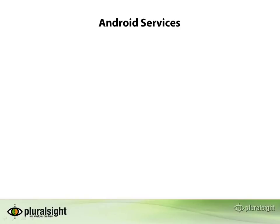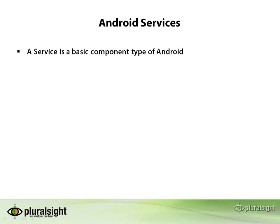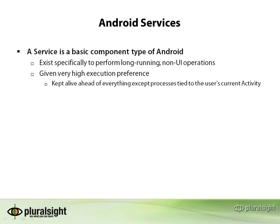The mechanism we have to let the operating system know that some activity or task is important to the user, even though the user isn't interacting with it right now, is a service. A service is just a component type for Android. As a component type, that means it's some class we implement and something we define inside of our Android manifest. Services exist specifically to tell the operating system that I'm performing some long-running operation, and I know it's not using the user interface right now, but it's still important to the user.